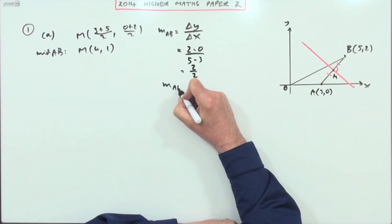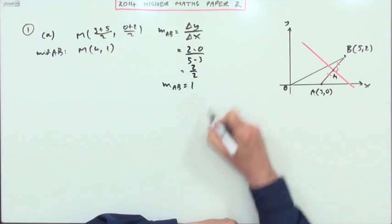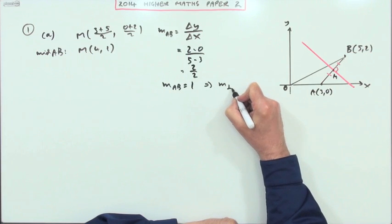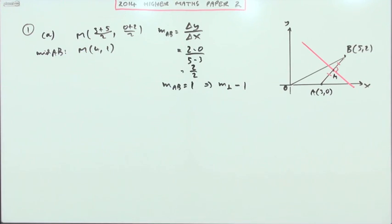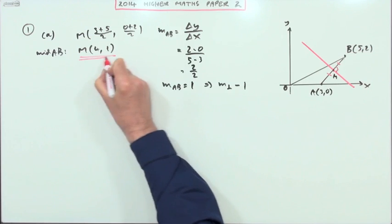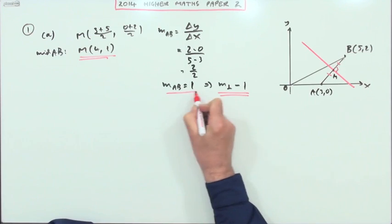That's 2/2, so the gradient of AB is 1, which means that the perpendicular gradient will be the negative of the reciprocal, which is -1. I was distracted from completing the equals sign by mentioning the word negative—there should be an equals there.